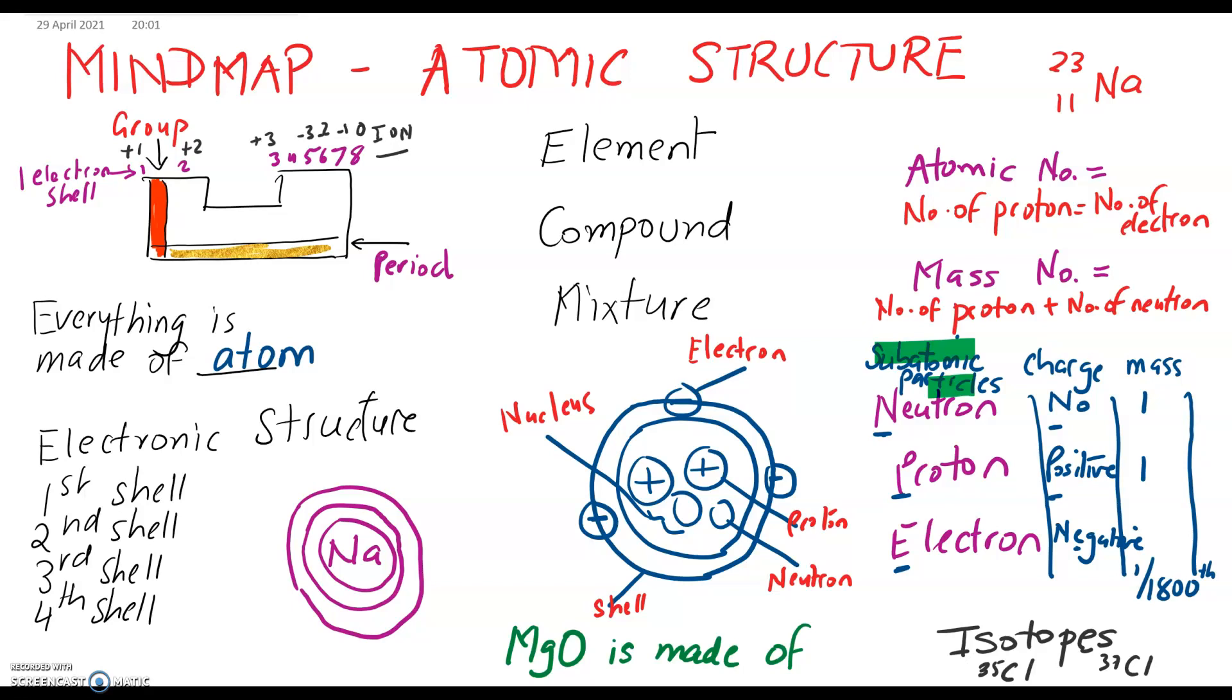If you look here, it says magnesium oxide is made of—you need to know two things here: it's made out of magnesium and oxygen atoms. You must know the two elements there.